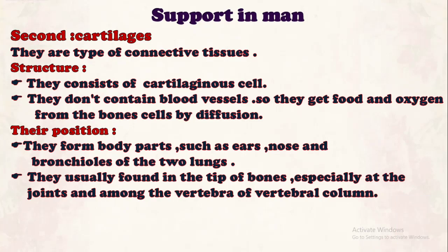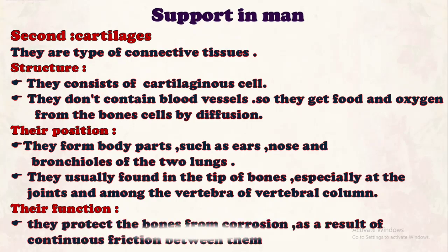Cartilage is found at joints and vertebrae to prevent friction and facilitate movement. The function of cartilage is to protect the bones from corrosion or erosion as a result of continuous friction between them. If there is no cartilage between bones, the bones rub together and cause damage, and the body cannot move. Cartilage has flexibility and elasticity, so it can allow movement in many directions and protect bones from corrosion.